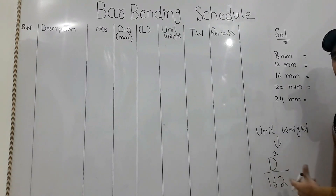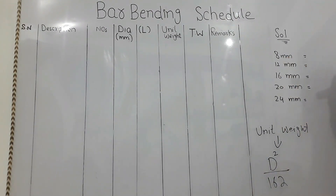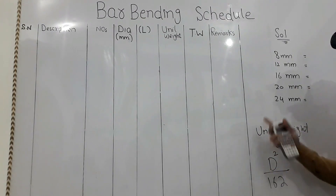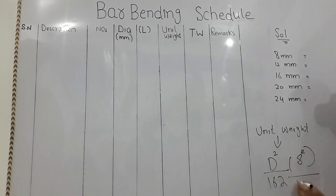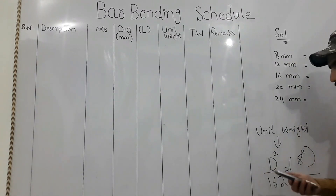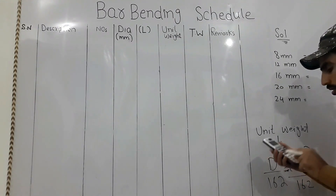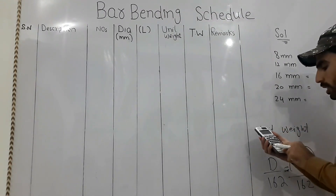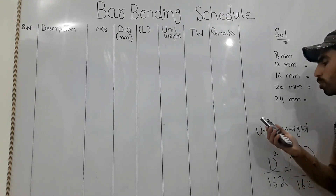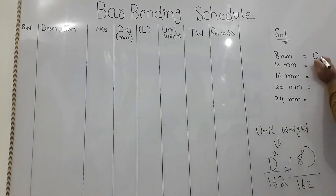So for 8mm diameter, what is the unit weight per meter? Using the formula: d² ÷ 162, we put 8² ÷ 162, which gives us 64 ÷ 162, equal to 0.395 kg per meter.